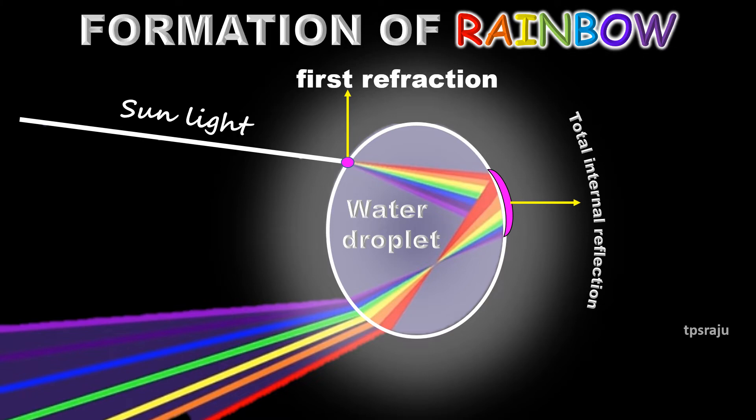Arriving at the surface of the drop, each color is again refracted into air. At the second refraction, the angle between red and violet rays increased. The angle between incoming and outgoing rays can be anything between 0 degrees and 42 degrees. We observe bright rainbow when the angle is between 40 degrees and 42 degrees.